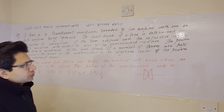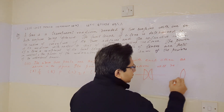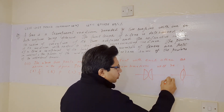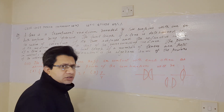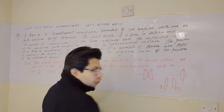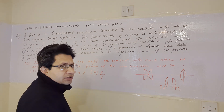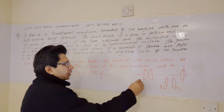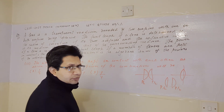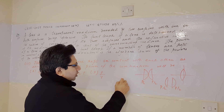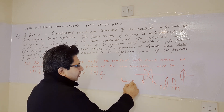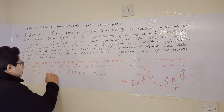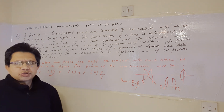As discussed in the previous problem, when a lens is cut into two equal parts along the perpendicular direction to the principal axis, each part has power P/2. When such parts are kept in contact with each other, their individual powers get added. So the total power of the combination is P/2 + P/2, which equals P. The total power is P, so option B is correct. Hope you understand the solution. Thank you.